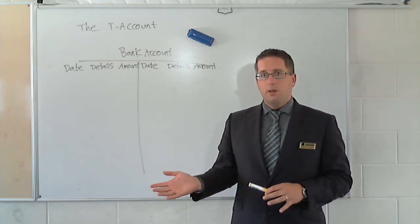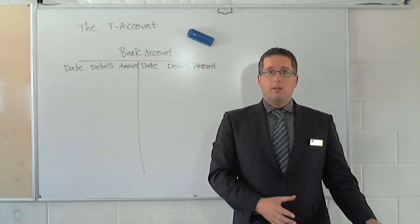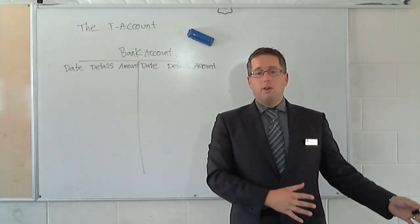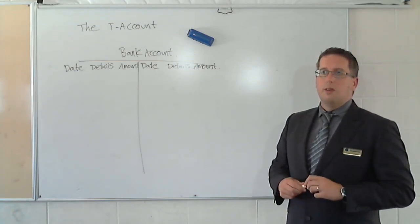So, the bank account would have one, a separate one. Vehicles would have a separate one. Sales would have one. Wages and salaries would have a separate T-account to keep track of what happens in each area.